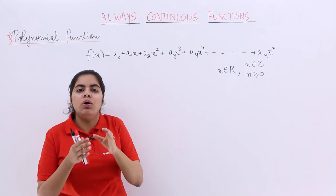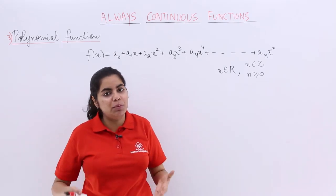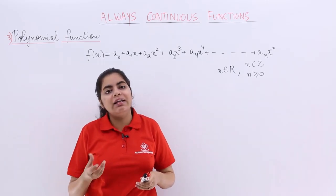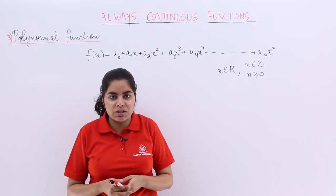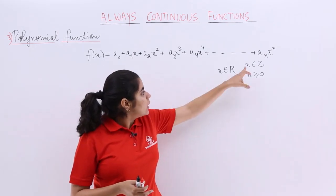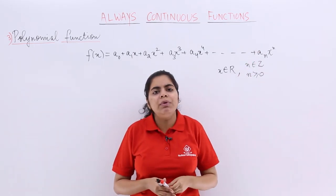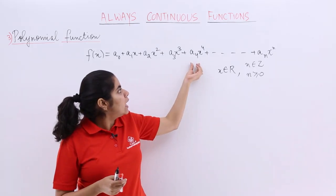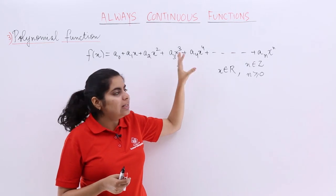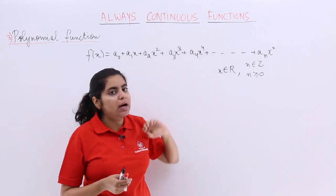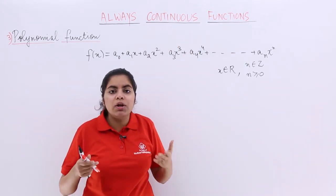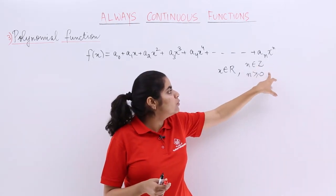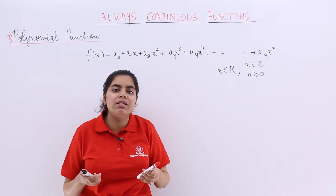You already know the condition on n for a polynomial function. The value of n must always be greater than or equal to 0 — that means it should not be negative. Also, n must always belong to the integers, meaning it should not be a fractional value. For example, something like 2x raised to the power 5/2 will not fit into the category of polynomial, because polynomial always has integer values greater than or equal to 0 — that means whole numbers.